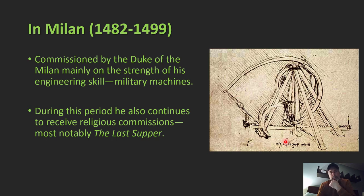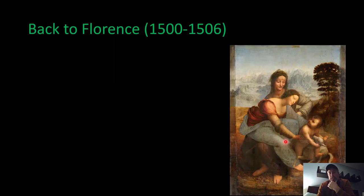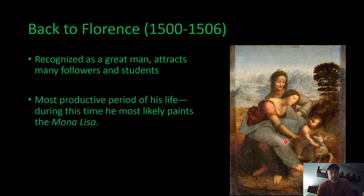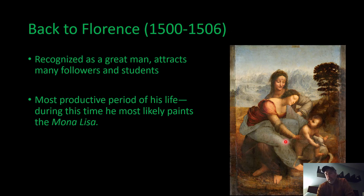Such was the extent of Leonardo's mind. He goes back to Florence and by this time people recognize that this is a great man. Lots of young artists, engineers, and inventors want to study with him, want to become part of his studio as his apprentice, just like he was with Verrocchio not that long before. Back in Florence, he's taking on apprentices, taking on clients, and getting all kinds of commissions. It's probably during this time of his life that he paints the Mona Lisa, which you could arguably call the most famous painting in the world — certainly in the Western world.